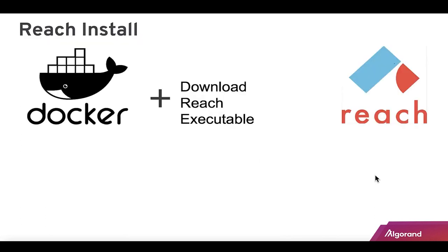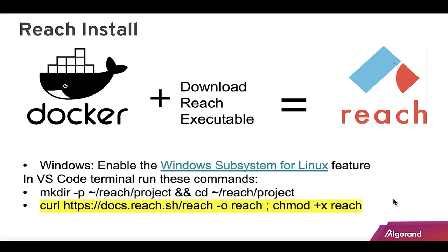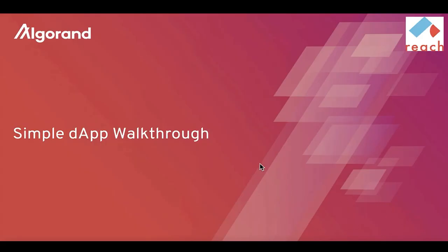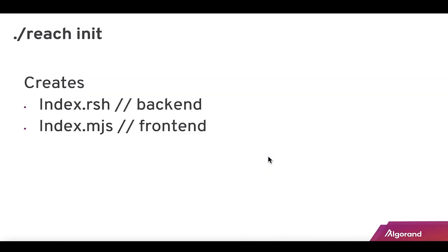To install Reach: download Docker, then curl the Reach executable into your project. On Windows, enable the Windows Subsystem for Linux feature. Handy commands: 'reach update' is probably the one used most, and 'reach run.' When you start programming in Reach, do a 'reach init' — that'll give you a whole back end and front end template for your application.